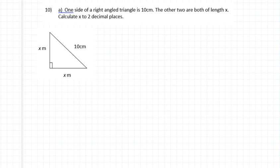Question 10 on this worksheet asks: one side of a right angle triangle is 10 cm, the other two are both of length x. Calculate the length of x to 2 decimal places.